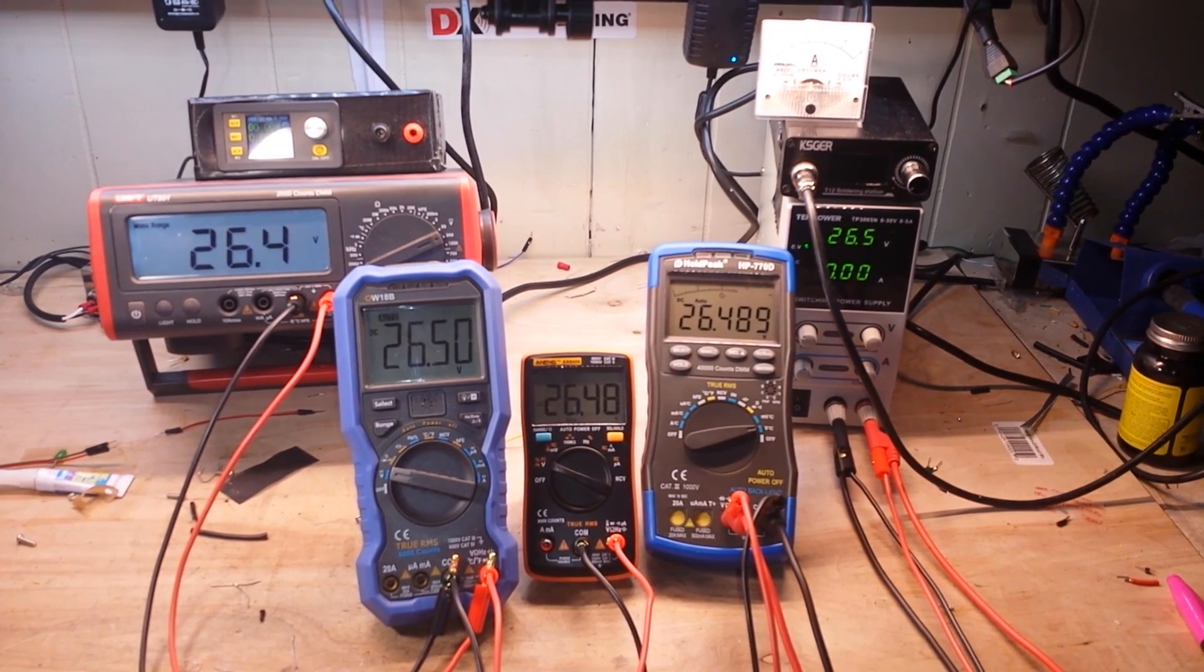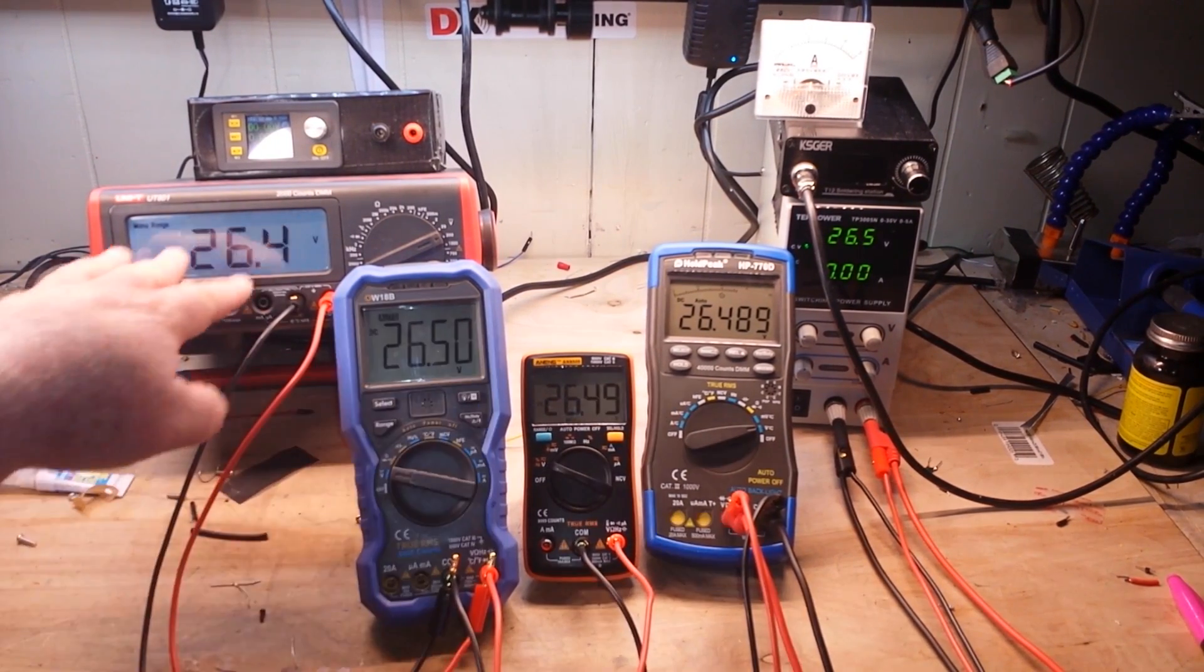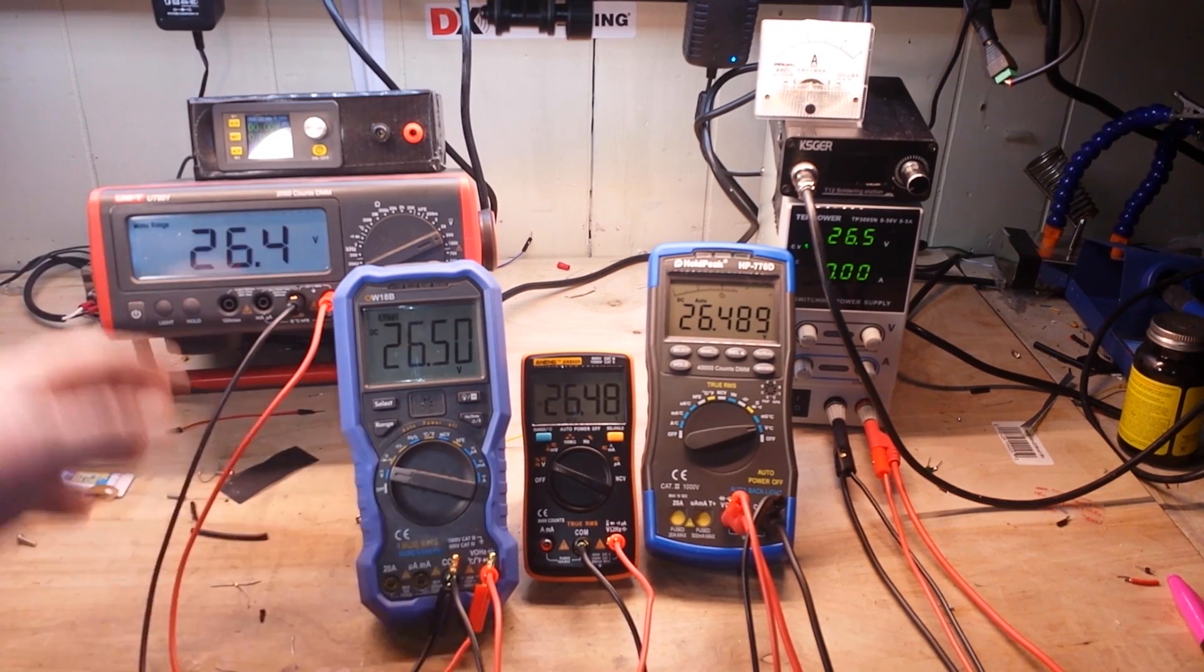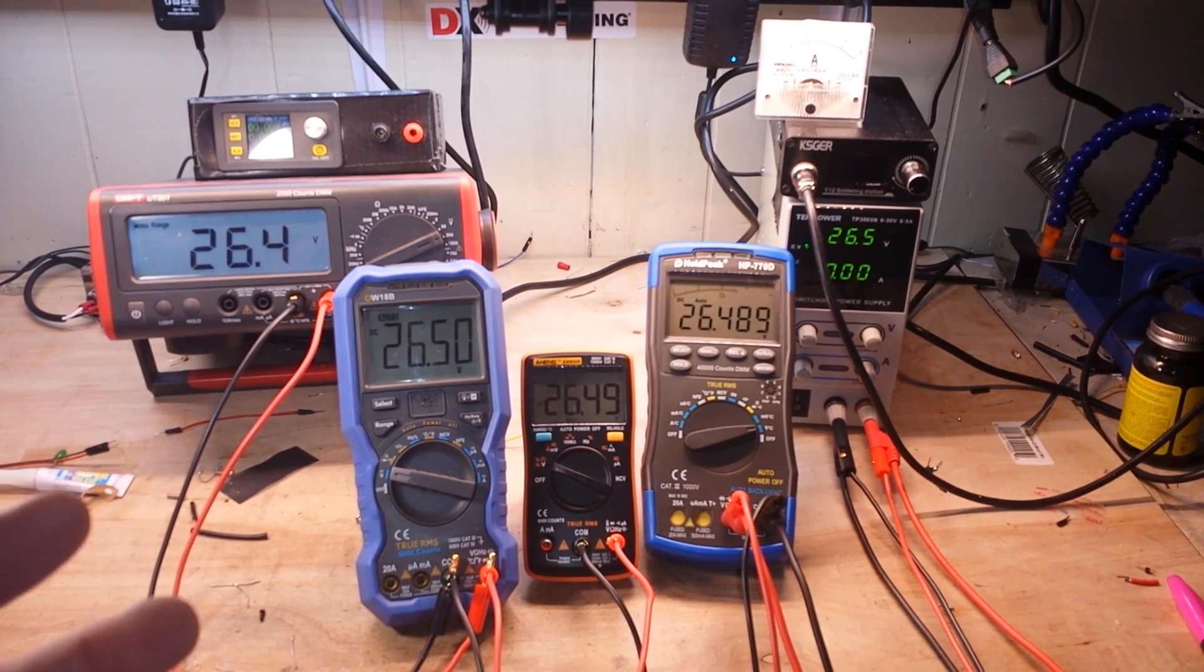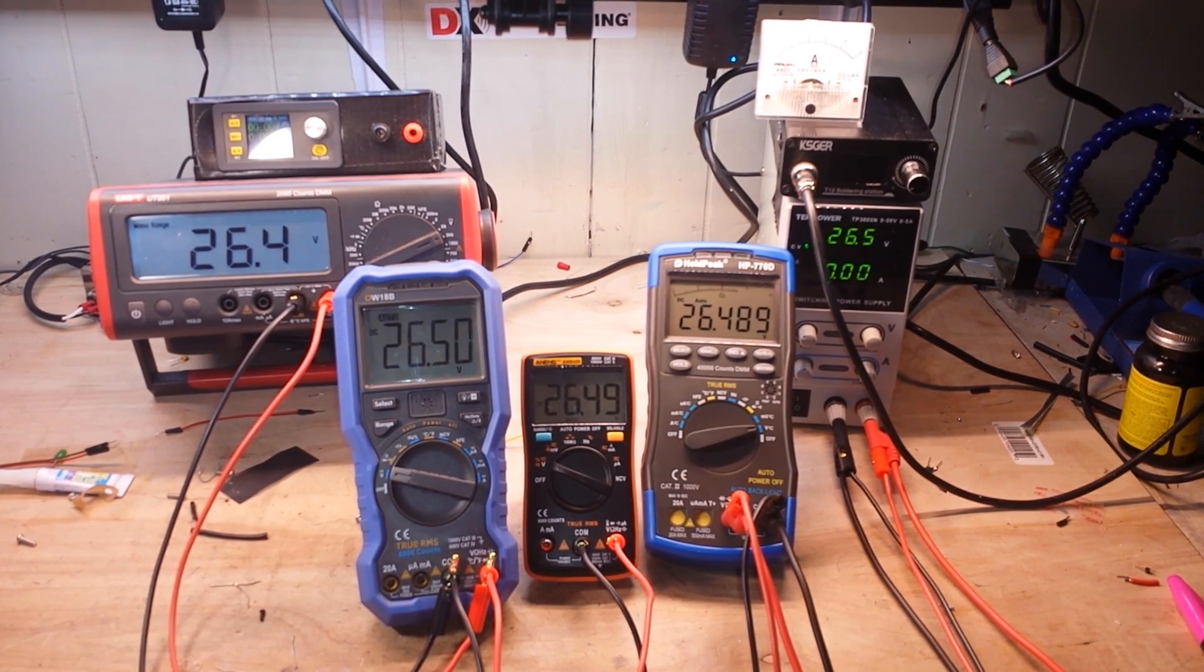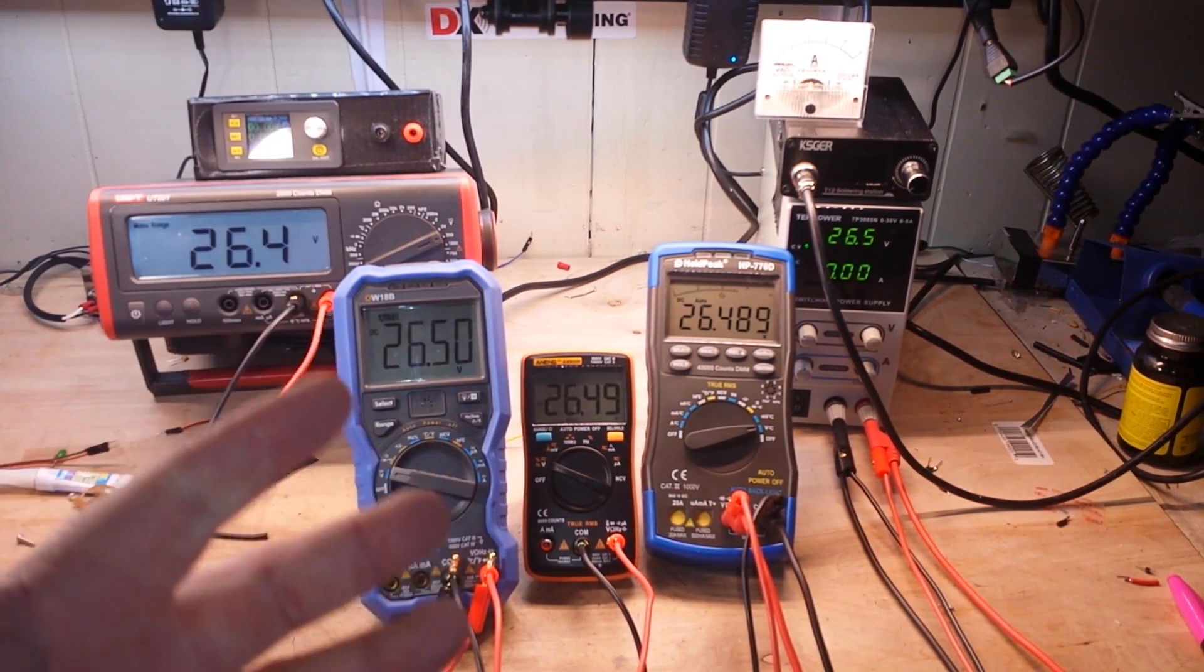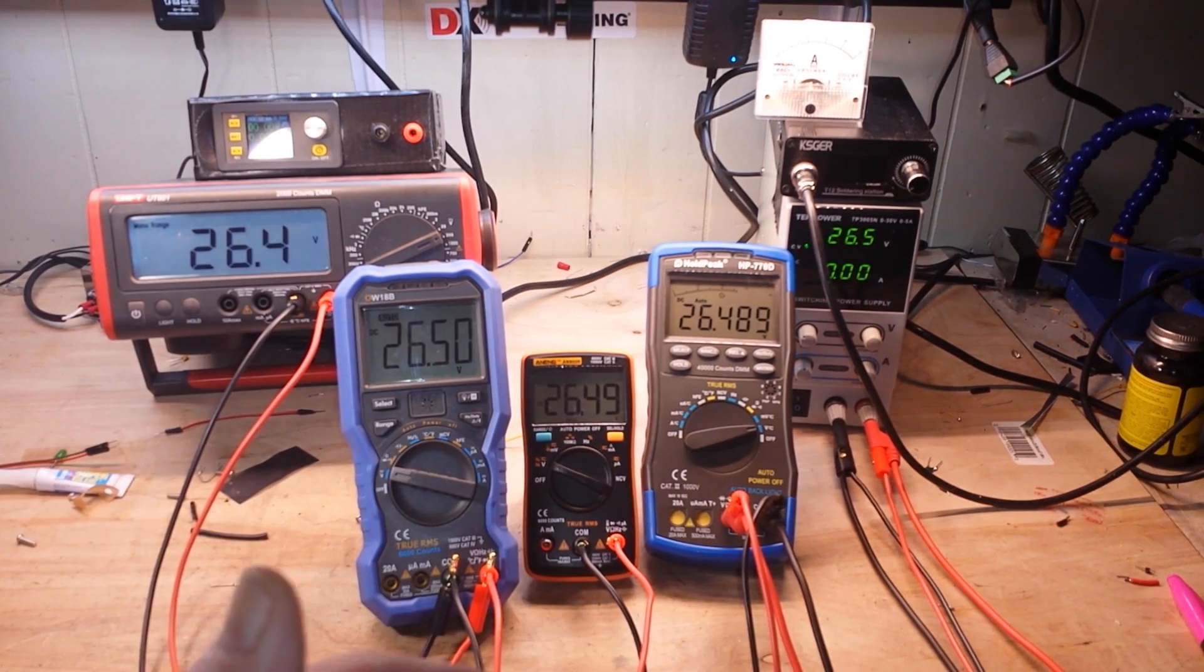Now, another thing that you are often going to see in reference mainly to bench type meters, although not this one, this is about as cheap as bench meters you can get, is digit count. You will see meters that say four and a half digits, five and a half digits. What does that mean?